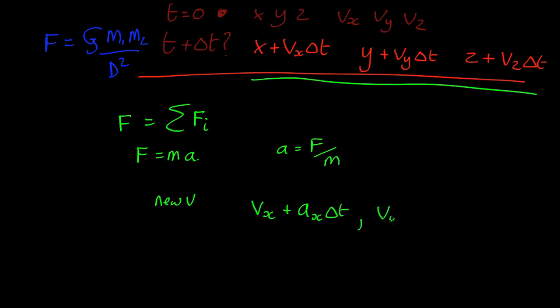The new velocity in y is going to be the old velocity in y plus the y component of the acceleration times delta t, and so on for z.